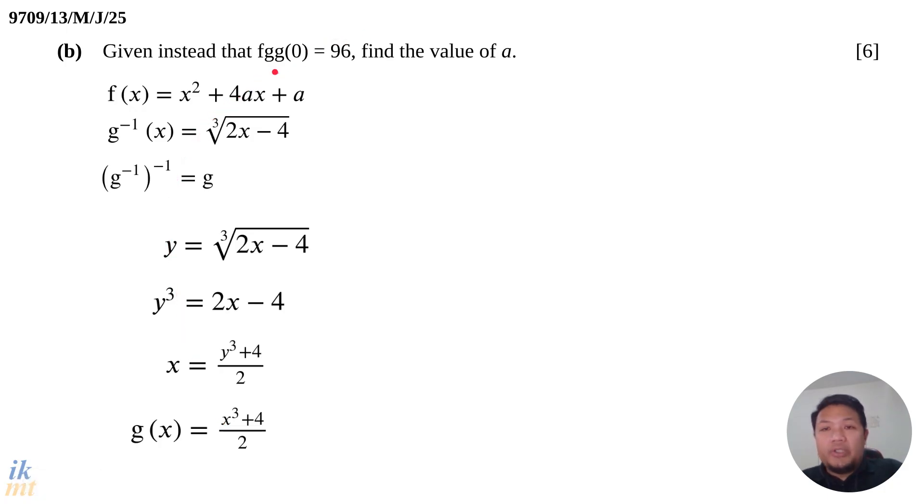We can now proceed to evaluating FGG zero. So, again, remember when you're evaluating composite function, you must start from the right and then to the left and then to the left. So we start with G of 0. So G of 0, just substitute 0 into G, you'll get 0 cubed plus 4 divided by 2 and you'll get 2. So G of 0 is 2. Next, we need to find G of G of 0 and G of G of 0 is just G of 2. G of G of 0 is really G of 2 because G of 0 is 2. So, just substitute 2 into G. So, substitute 2 into G, you have 2 cubed plus 4 divided by 2 and you get 6.